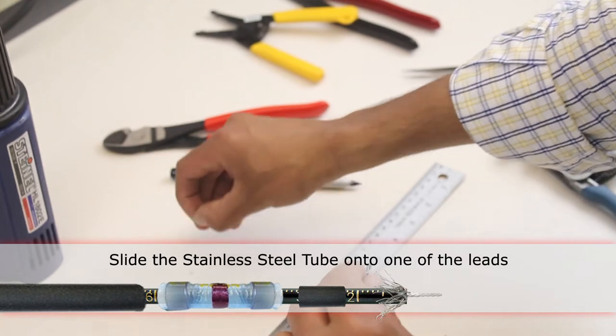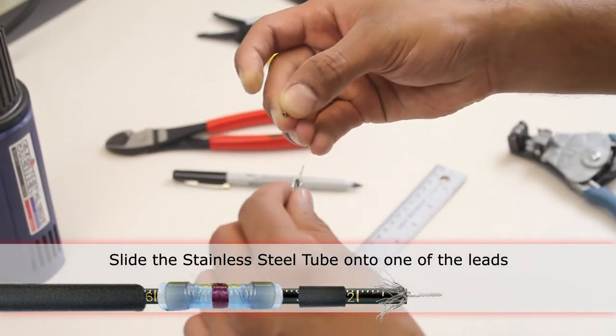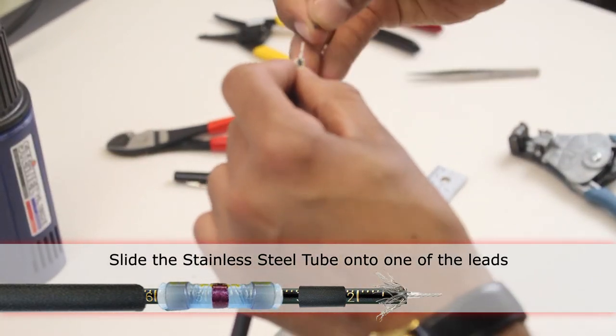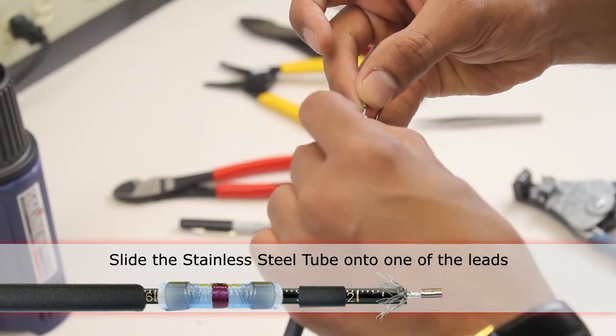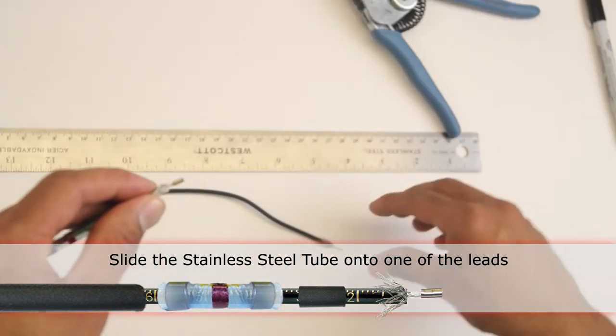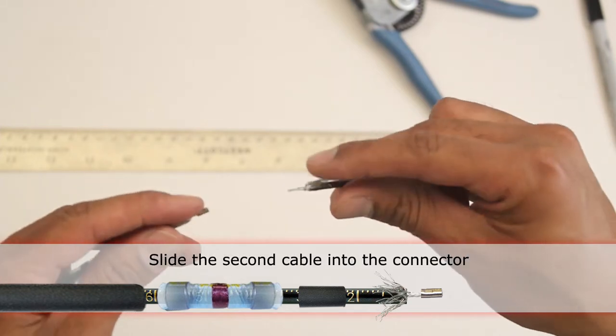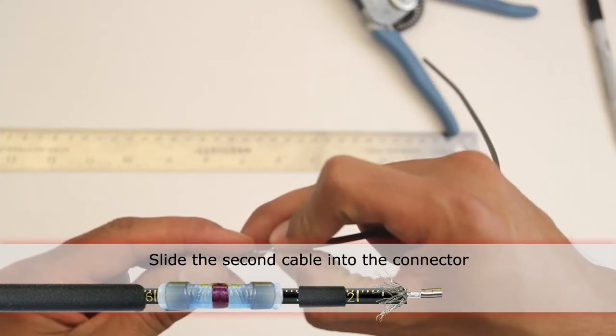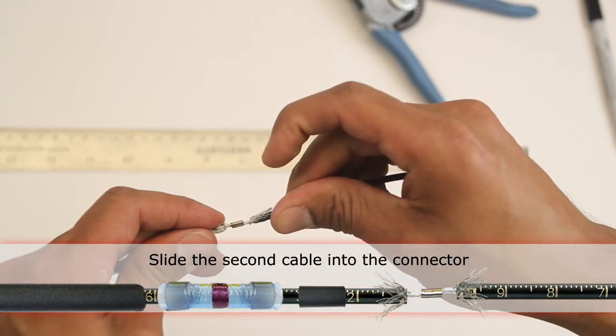Now we'll take the small butt splice conductor, stainless steel tube. It's an oval tube. Put the stripped end from one end. Take the other cable, push it from the other side of the tube. They both will overlap. Make sure they go all the way to the center insulation.